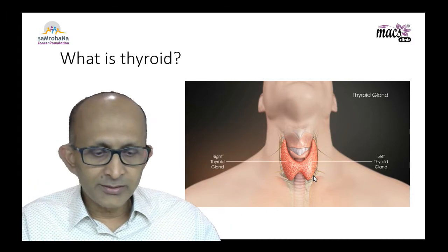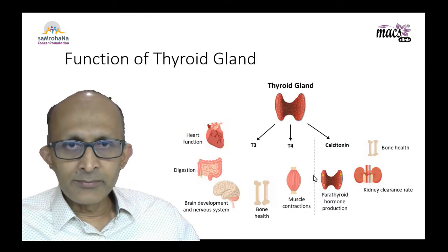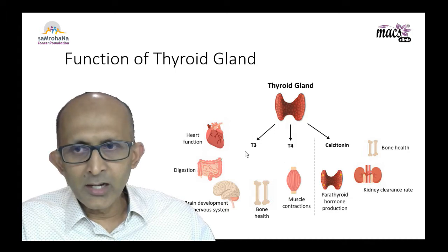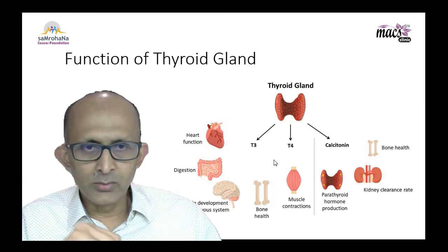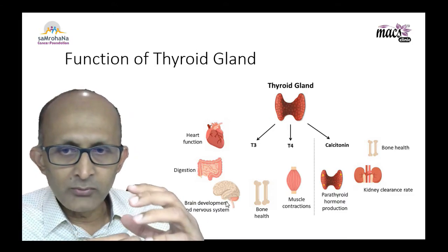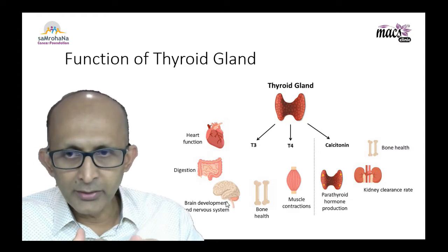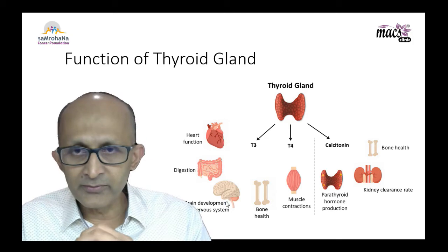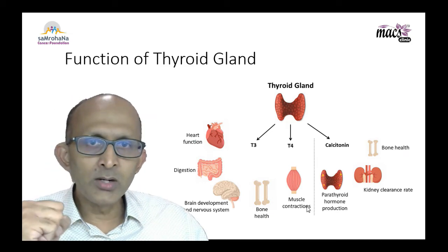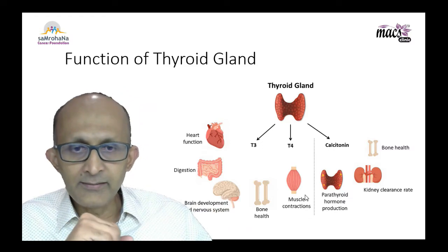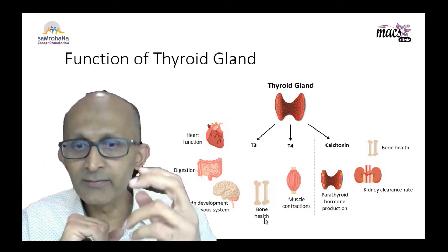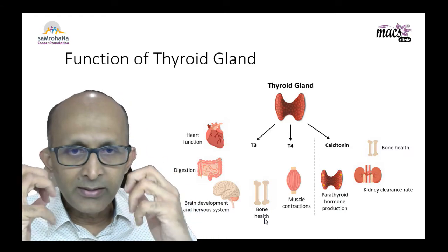Now, what does it do? Its function is to secrete — the main things it secretes are what are called thyroid hormones, medically known as T3 and T4. These two hormones are basically involved in the use of energy in the body. They are required for producing heat, digestion, heart function, muscle contraction, healthy bones, and in children, the development of the nervous system and intelligence.